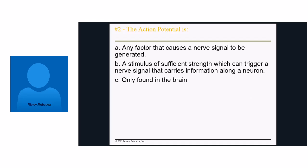Now we're getting into action potential and resting potential — this part can be a bit confusing, but I'll try to make it as simplified as possible. Here's a question: the action potential is A) any factor that causes a nerve signal to be generated; B) a stimulus of sufficient strength which can trigger a nerve signal that carries information along a neuron; or C) only found in the brain. If you picked B, that means you've already been studying — that is the answer.